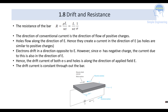Considering drift and resistance, the resistance of a bar is R = ρL/A = (L/wt)·(1/σ), where ρ = 1/σ is resistivity, w is the width of the bar, and t is the thickness of the bar.